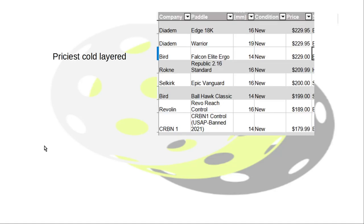On the other end, we're looking at the most expensive cold layer paddles. Diadem's in there, Selkirk and some others, it's across the board. You can pause it and read these, I'm not going to read them all.